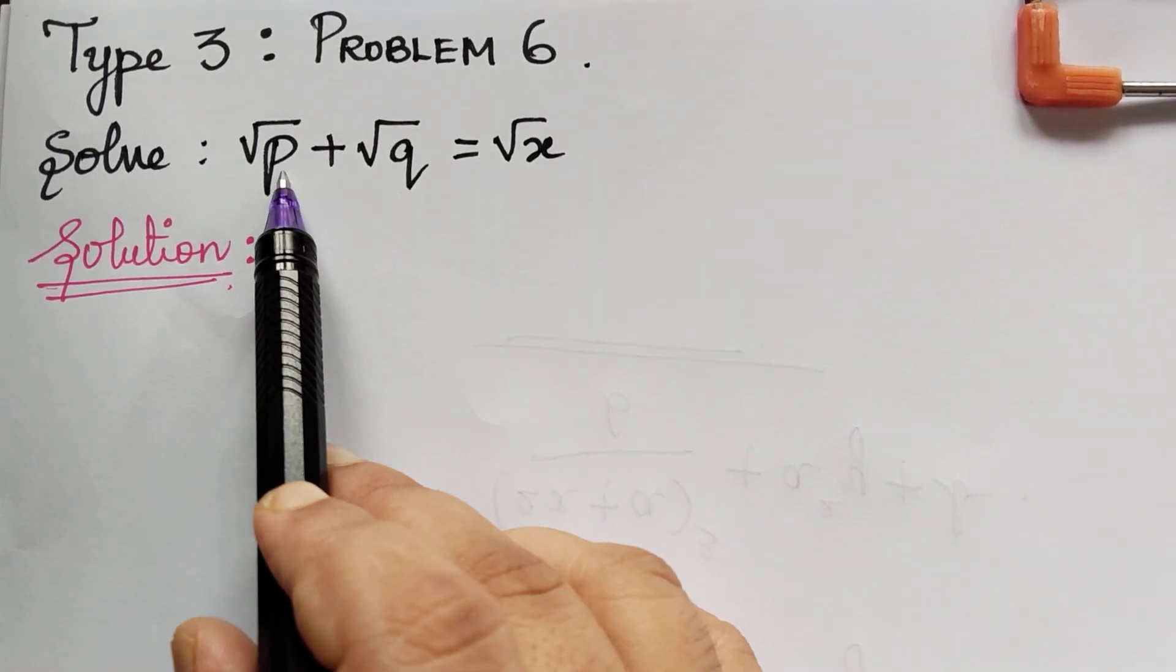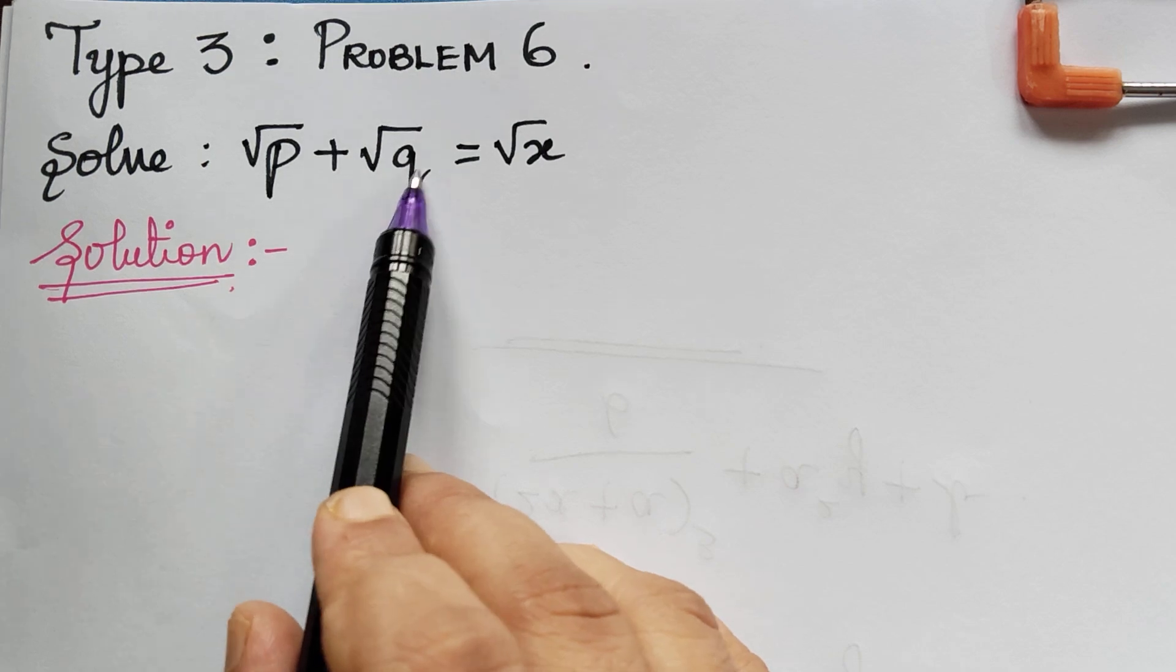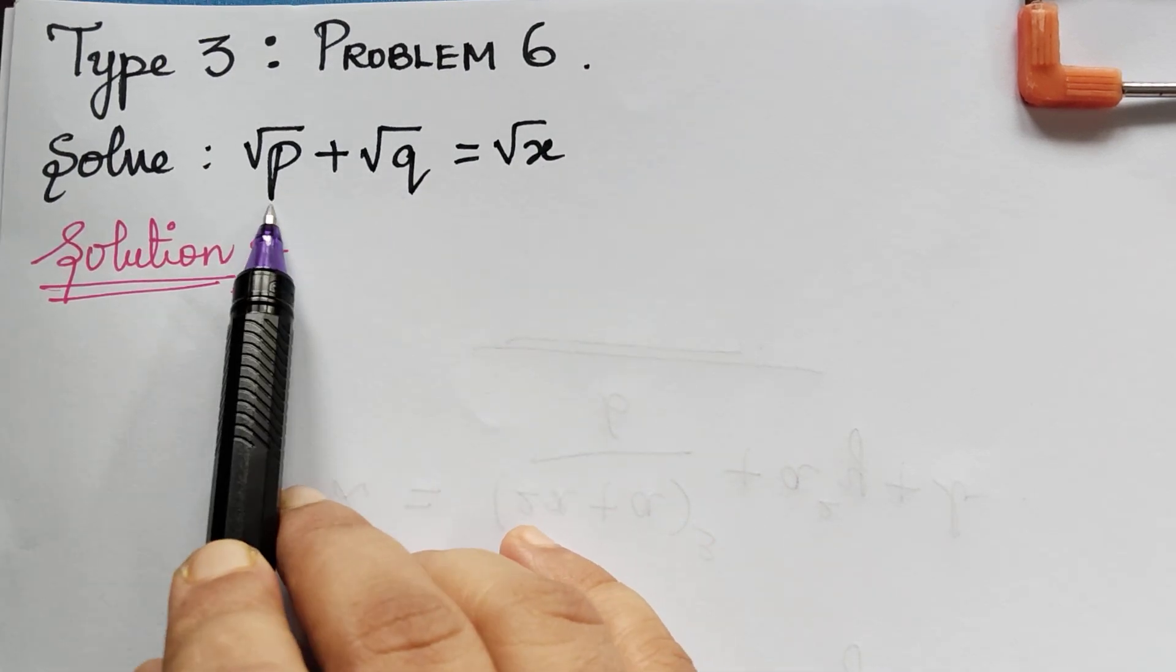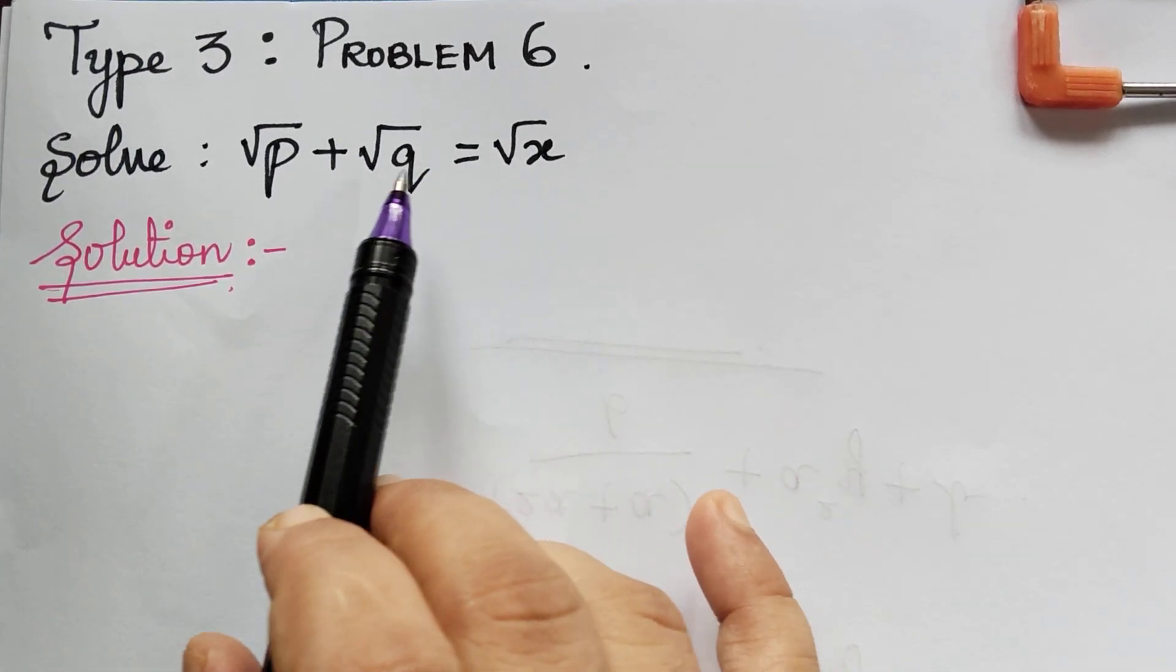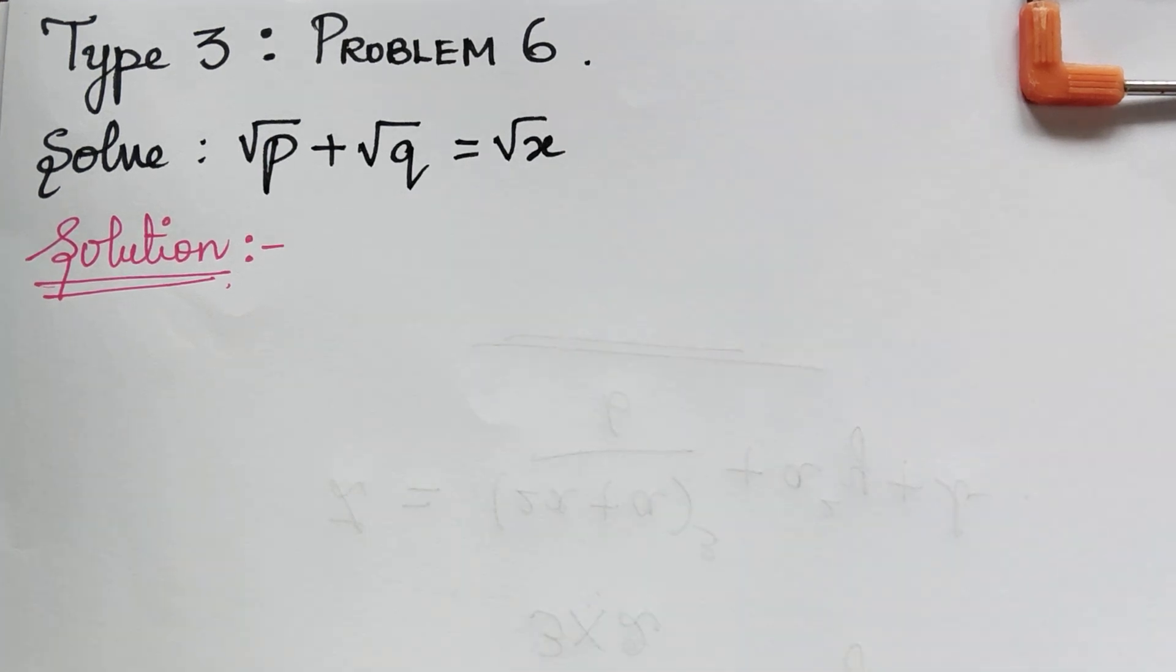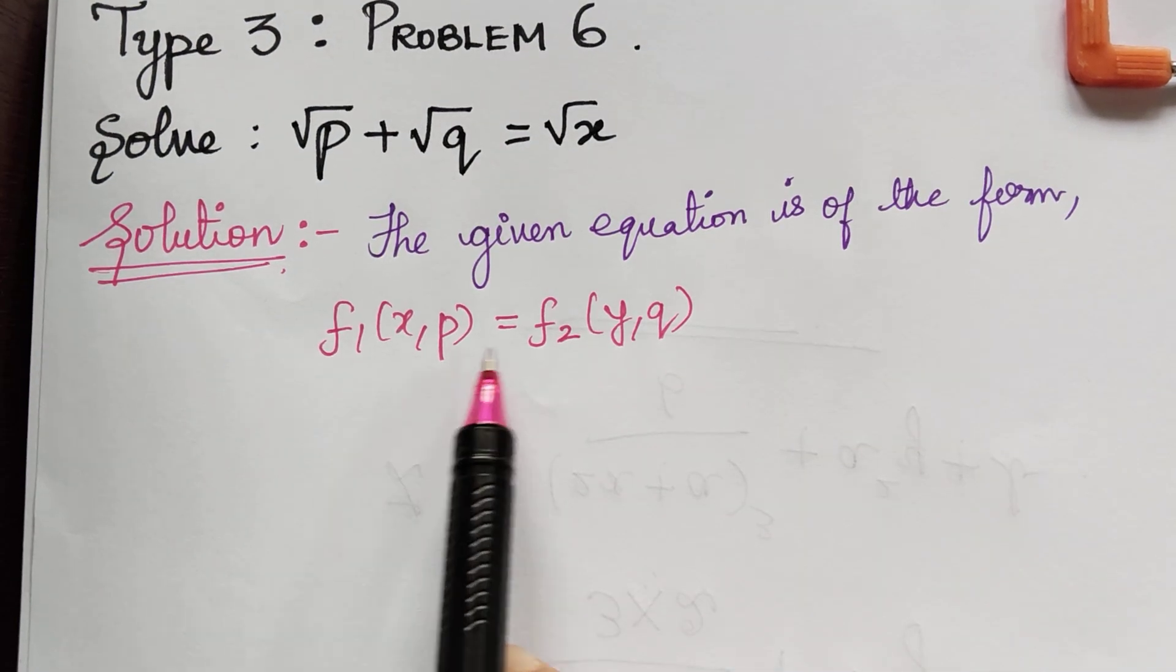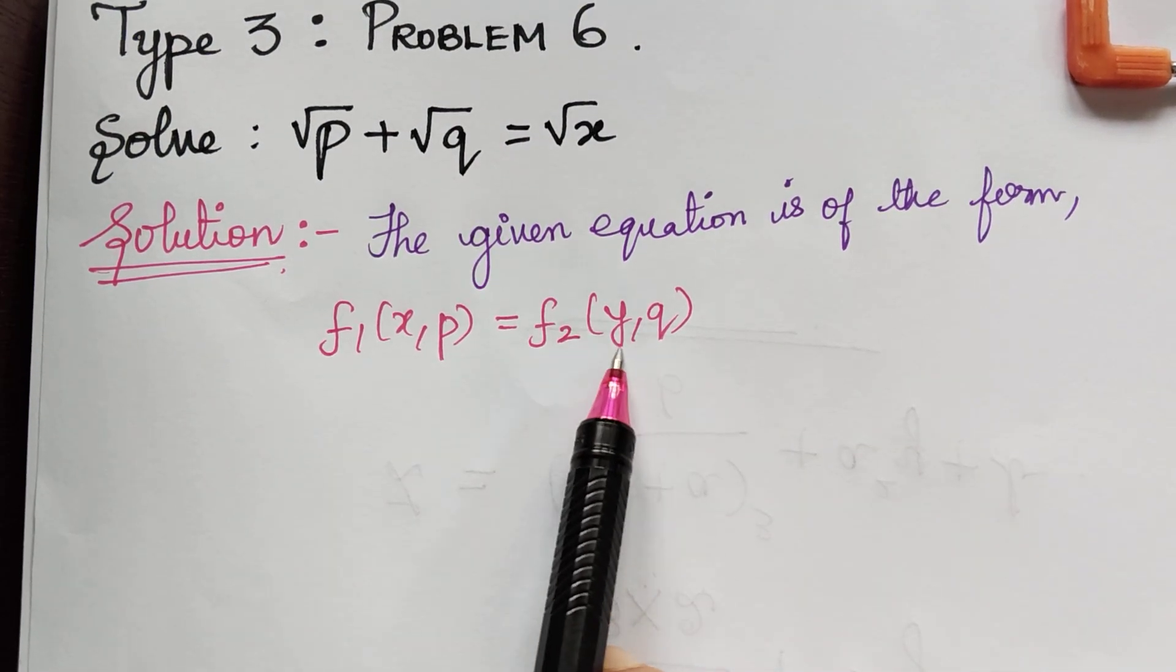So we observed that in this question only p, q and x are present, z is not present. So whenever z is not present, this given equation is of the form f1 of x, p equals f2 of y, q.